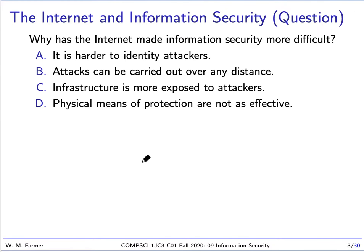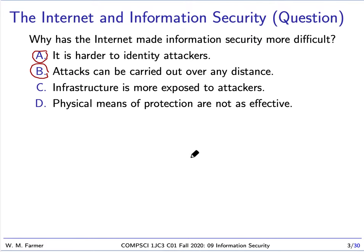There are four possible answers. First, it is harder to identify attackers — attackers can come from any place in the world and attack using the internet. Second, attacks can be carried out over any distance — attackers can strike from anywhere in the world, even from a great distance. Third, infrastructure is more exposed to attackers. Before the internet, it would be very hard for someone to break into a building from another continent. Today, this is not inconceivable at all, so infrastructure is much more exposed to attackers.